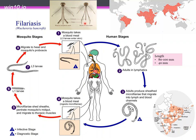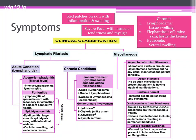The proboscis is well-developed in female mosquitoes, allowing them to penetrate human skin. Male mosquitoes are mostly harmless. The infective form transmitted is the L3 larval stage.